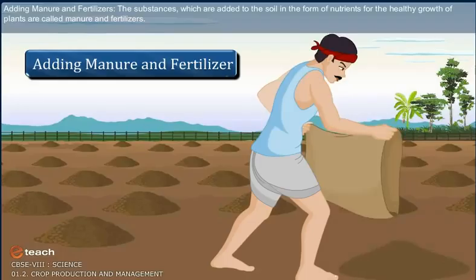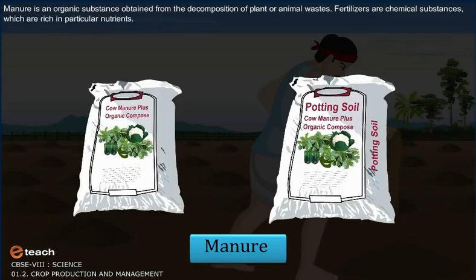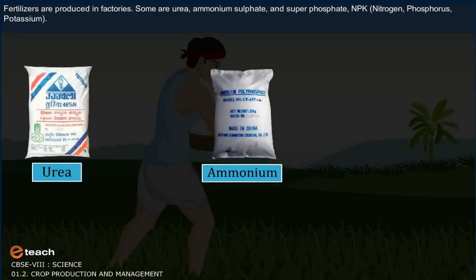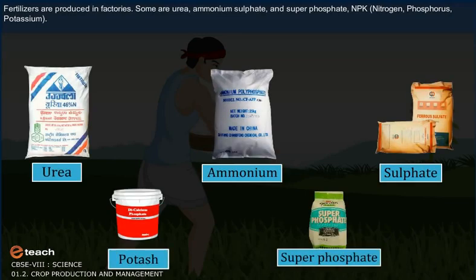Adding manure and fertilizers. The substances which are added to the soil in the form of nutrients for the healthy growth of plants are called manure and fertilizers. Manure is an organic substance obtained from the decomposition of plant or animal wastes. Fertilizers are chemical substances which are rich in particular nutrients. Fertilizers are produced in factories. Some examples are urea, ammonium sulfate, superphosphate, and NPK — nitrogen, phosphorus, potassium.